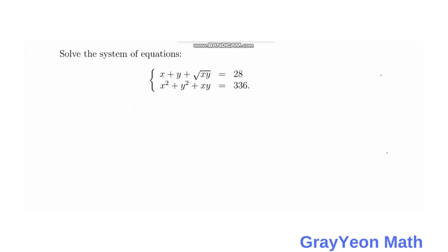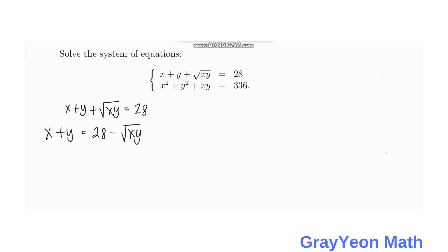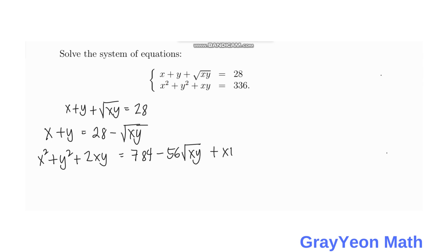The first thing we have to do is manipulate Equation 1. Equation 1 is x plus y plus the square root of xy is equal to 28. We move the square root of xy to the right side and square both sides, giving us x squared plus y squared plus 2xy equal to 784 minus 56 times the square root of xy, plus xy.